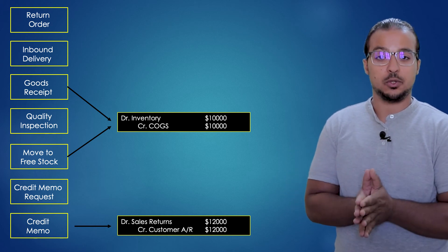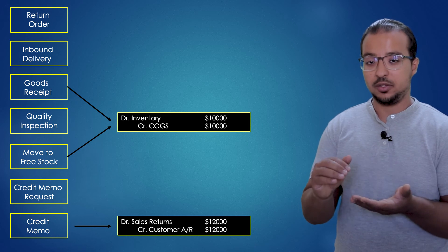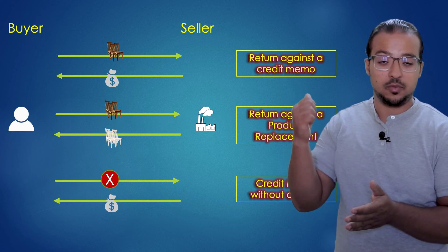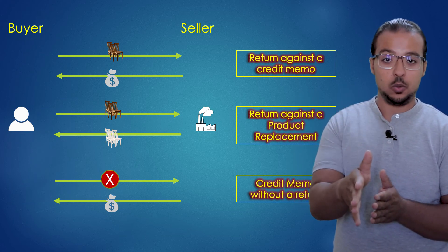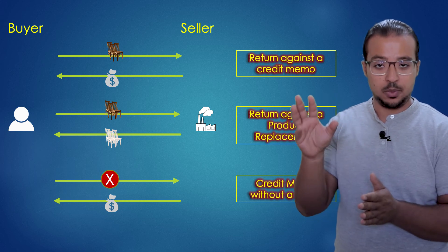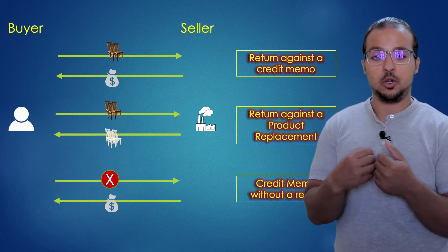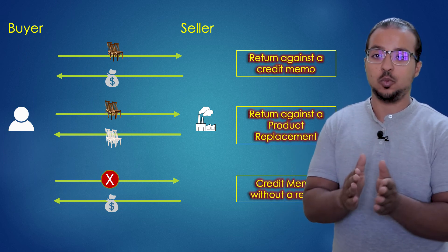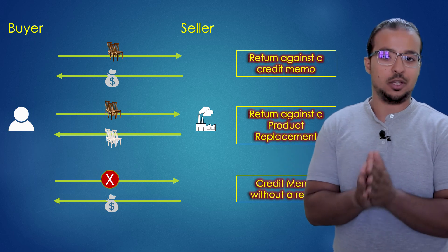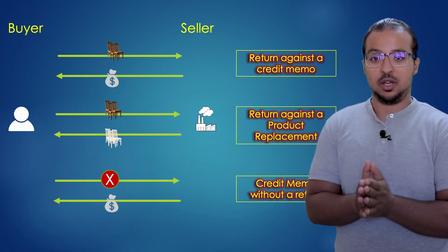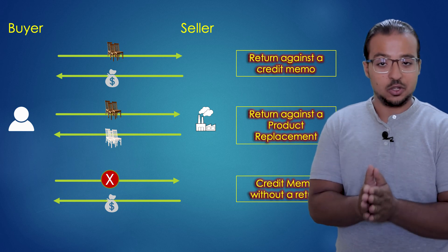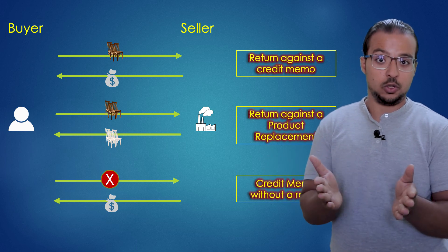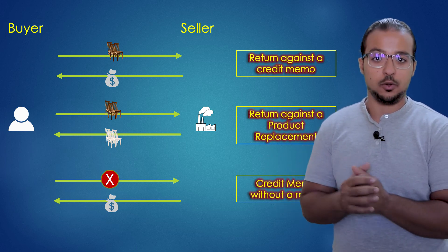This is it for the basic sales returns process. I'm not sure if I will explain all the different variations, such as returns against a replacement or sending the product back to the vendor. It all depends on you. After the video, I'm going to create a poll on the community page on the YouTube channel, and I want you to vote whether you want me to explain the different variations or whether this is enough and I should move to other processes. Remember, I only publish one or two videos per week, so if you want the other variations explained, it will be over the next videos.